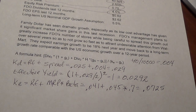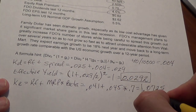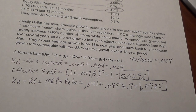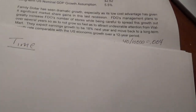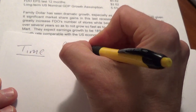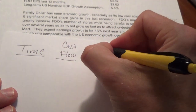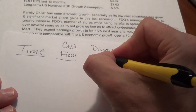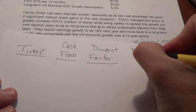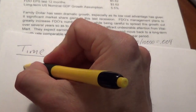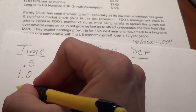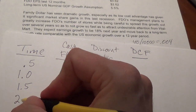Step 2 is to price the securities. We have our discount rates: .0292 for the bond and .0725 for the stock. Let's price the bond first. To price the bond, we set up a table with columns for time, cash flow, discount factor, and discounted cash flow. Since the bond has 2 years left and pays every six months, our timing is 0.5, 1, 1.5, and 2 years.